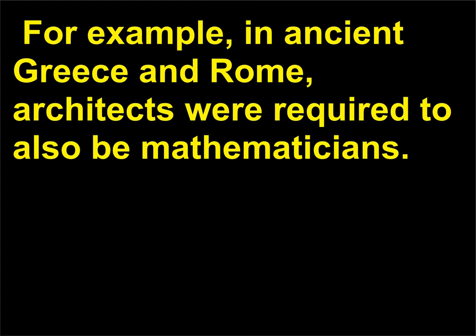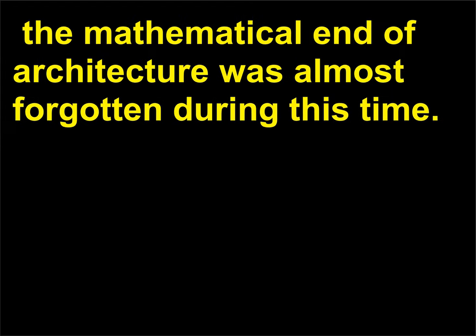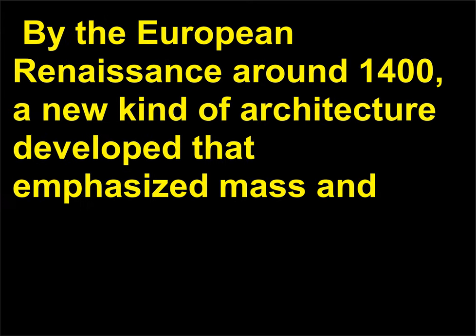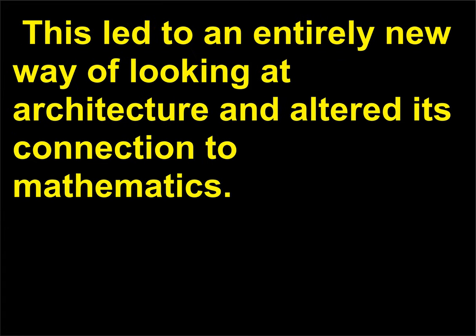During medieval times, most buildings and structures carried some symbolic reference to the church, and the mathematical end of architecture was almost forgotten. By the European Renaissance around 1400, a new kind of architecture developed that emphasized mass and interior space to produce aesthetically pleasing pictures similar to those found in paintings and sculptures. This led to an entirely new way of looking at architecture and altered its connection to mathematics.